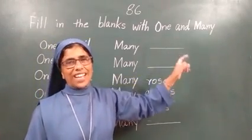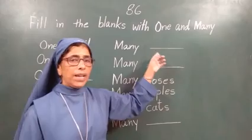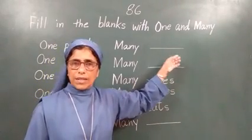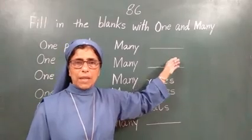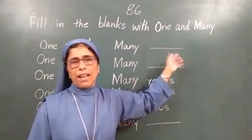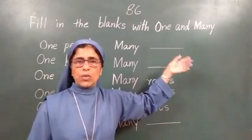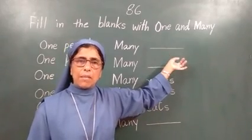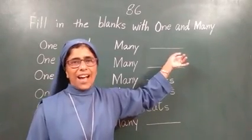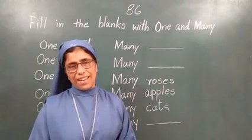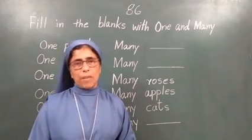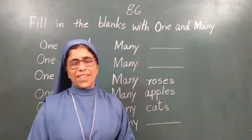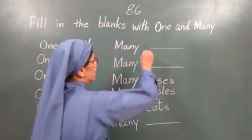Yes, jodna hai. Many — bhot saare. Hena? Kitna bhi ho to, kya likhna hai? Pencil 4 ho, 5 ho, 10 ho — kya likhna hai? Pencils likhna hai. Agar ek hai to pencil. Do hai to pencils. Do se zyada hai to pencils. Okay? Ab idhar pencils likhna hai. P-E-N-C-I-L.